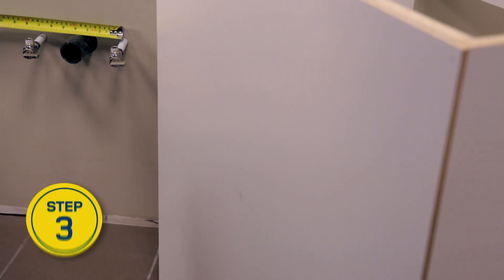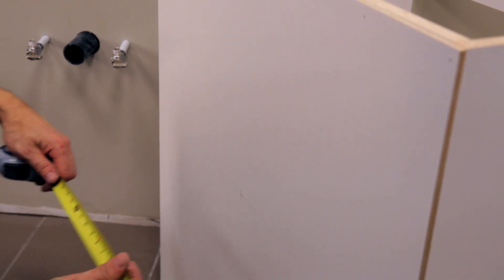To run the plumbing through the cabinet, you might need to do cutouts in the back panel. This should be done before installing the cabinet.